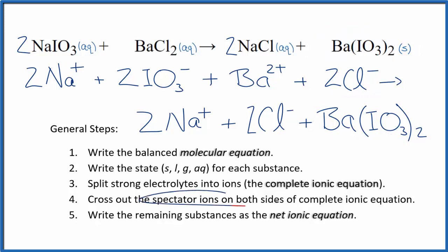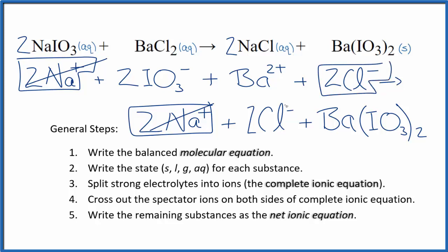Now we can cross out spectator ions. They're on both sides. In the reactants, I see that there are two sodium ions here, and again in the products. Let's cross those out. Those are spectator ions, and then two chloride ions in the reactants and in the products. Spectator ions, we cross them out. What's left, that's the net ionic equation for NaIO3 plus BaCl2.